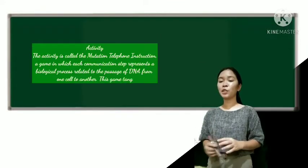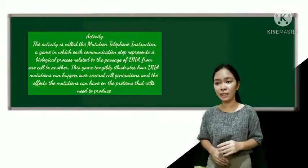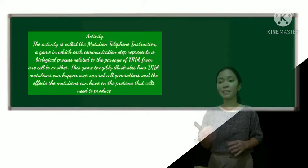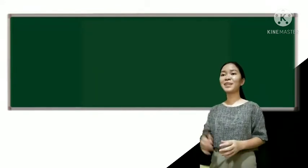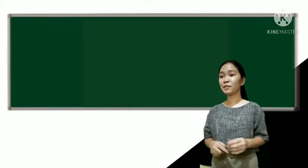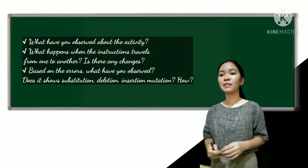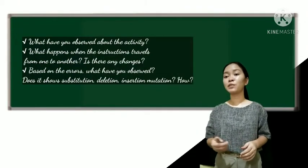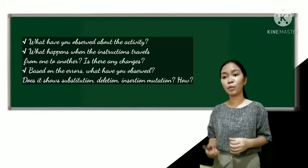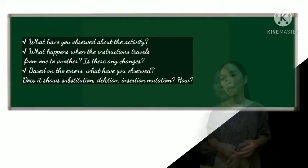I have already introduced to you the terms and things that you need to know about mutations. So let's have an activity named mutation telephone instruction. So simply divide the class into three. Okay, so it seems that you had enjoyed your activity. So I would like you to choose your representatives to discuss what you have observed as a group, together with these guide questions. So I would like you to create a summary about the lesson as well as provide important points from the activity you'll have. So you'll have 15 minutes to prepare.